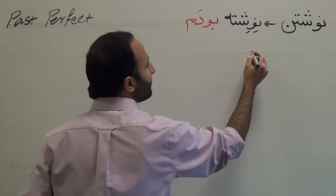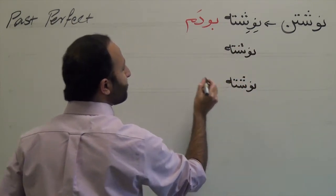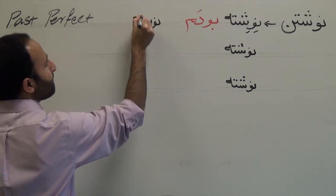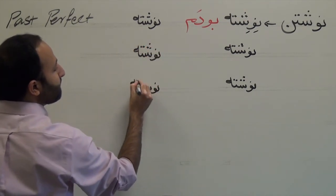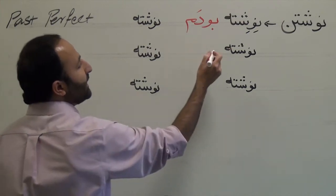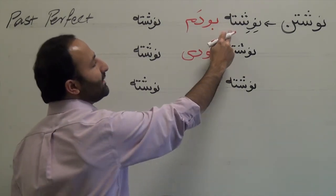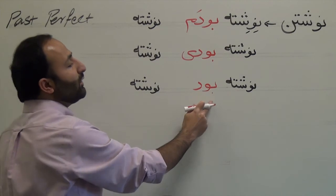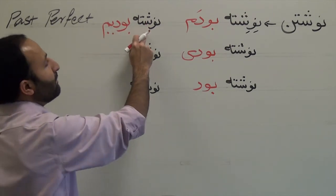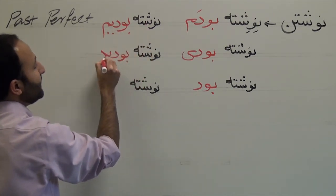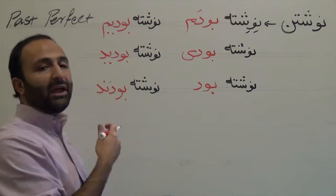Neveshteh-boodam, I had written; neveshteh-boodi, you had written; neveshteh-bood, he or she had written; neveshteh-boodim, we had written; neveshteh-boodid, you had written (plural); and neveshteh-boodand, they had written (third person plural).